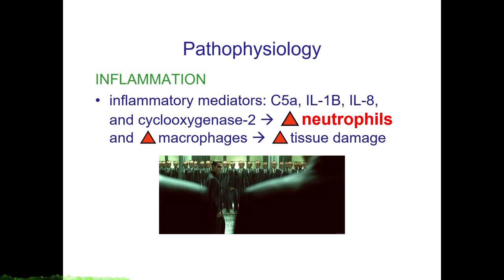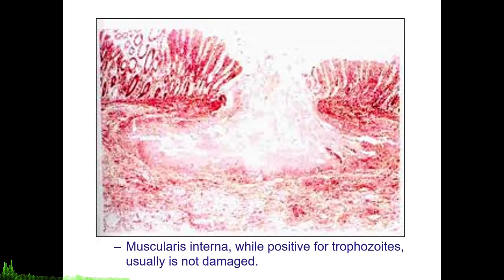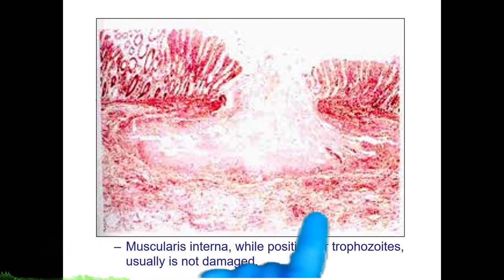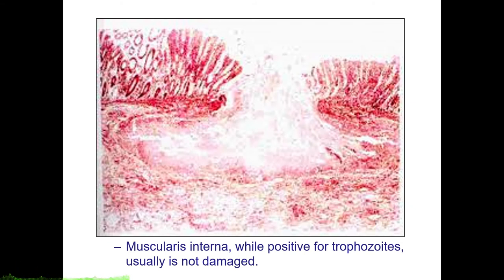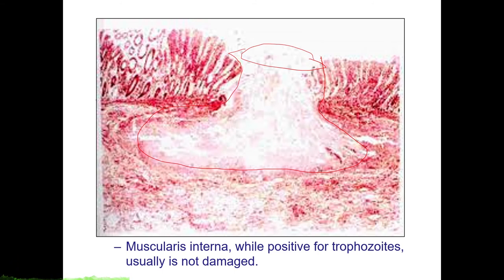Corticosteroid therapy and other immunosuppressive situations are known to worsen clinical outcomes, possibly because of their dampening effect on the innate immune response. While Entamoeba histolytica is known to be invasive, the muscularis interna — while positive for trophozoites — is usually not damaged. That is why a characteristic lesion of amoebiasis is your flask-shaped ulcer. Once interglandular epithelium falls, cells below offer poor resistance to invasion, but spread is limited by the muscularis interna. However, it can still spread hematogenously due to capillaries within the submucosa.